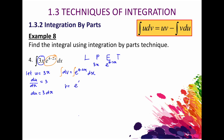Integrating dv, we get v equal to e^(4−2x) over the differentiation of (4−2x), which is negative 2. Rearranging according to the integration by parts formula, the integral of 3x times e^(4−2x) dx equals uv, which is 3x times negative e^(4−2x) over 2, giving negative 3 over 2 times x times e^(4−2x).